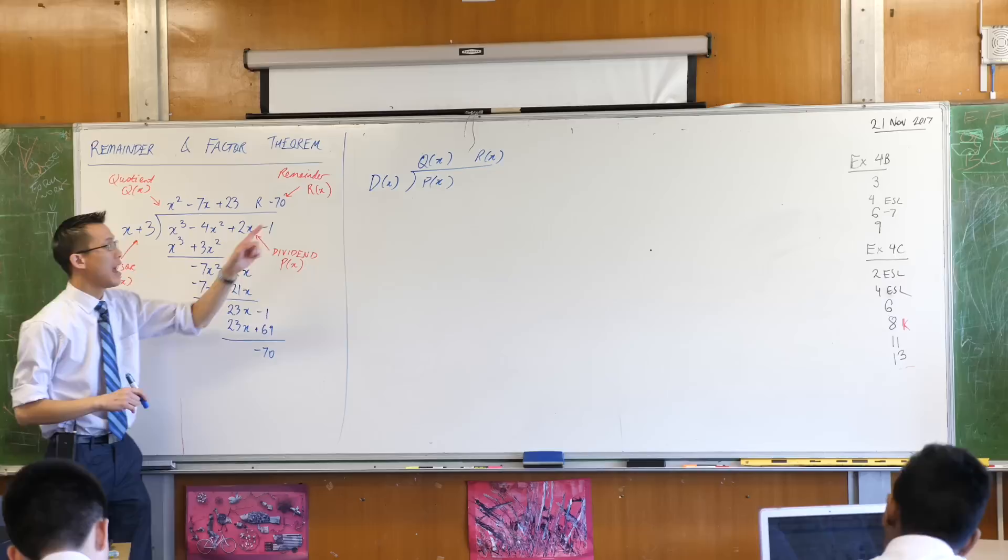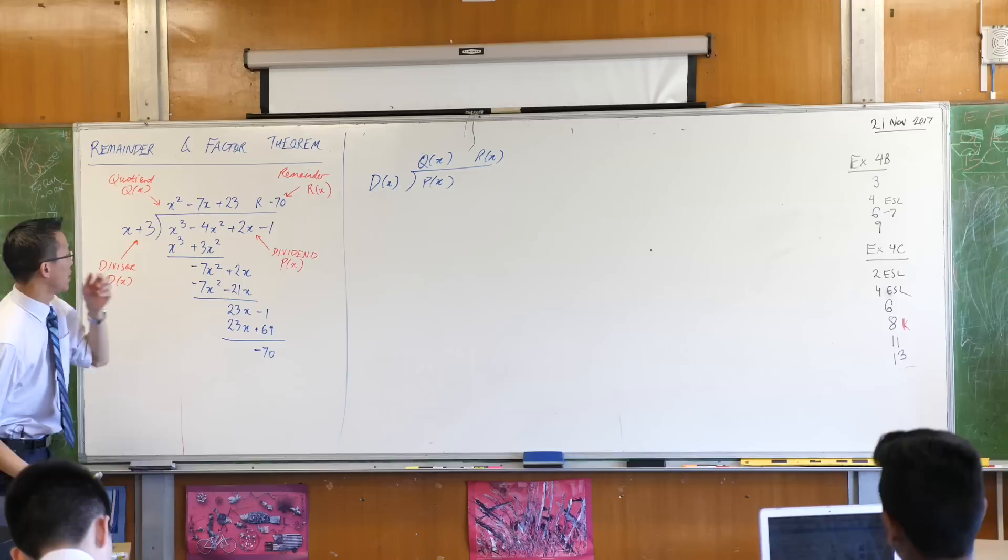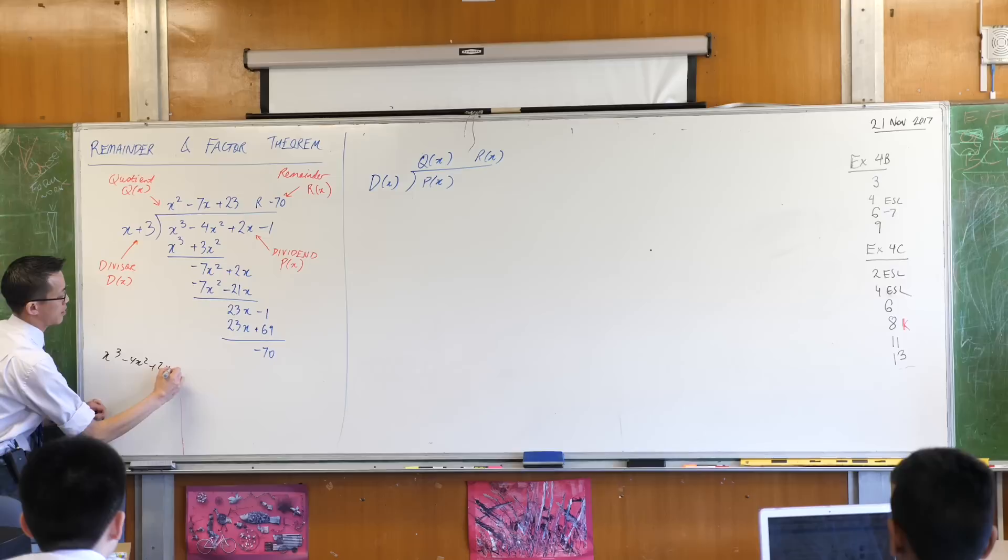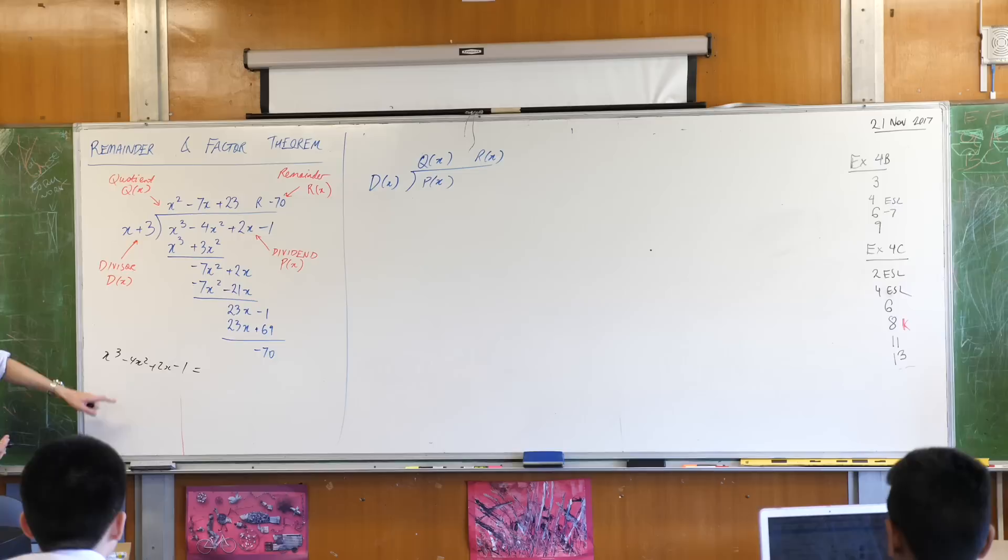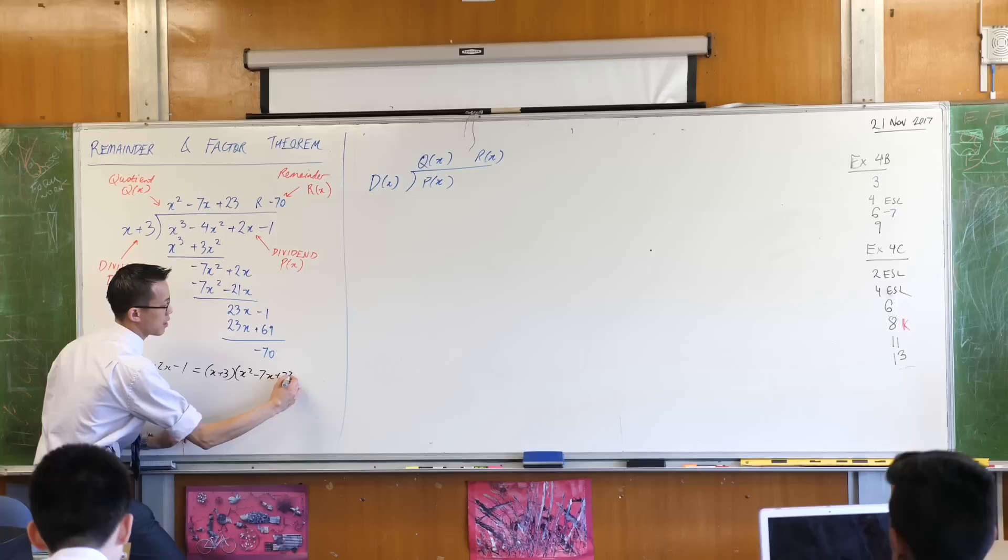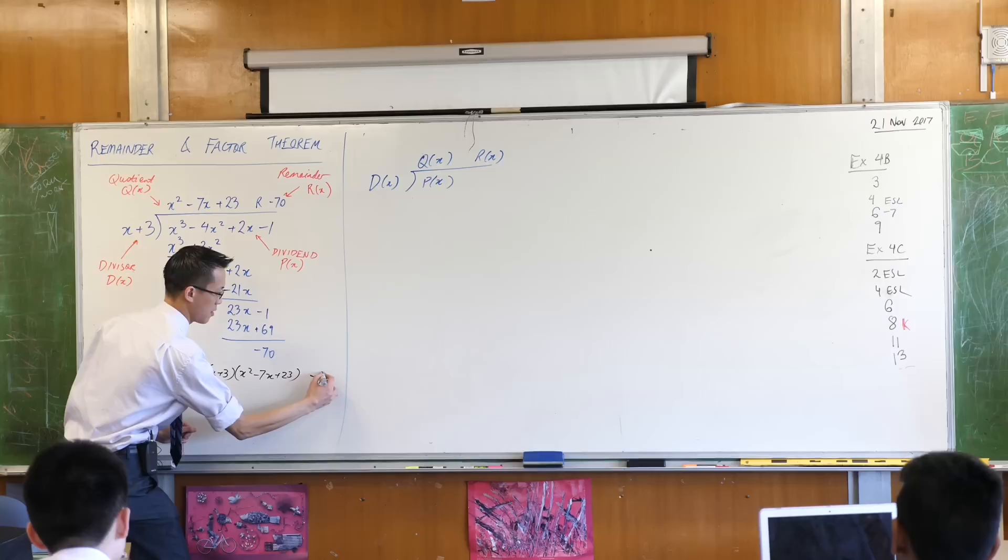Now what I'd like us to do is look at this thing here and make a statement about all of this from this working, and we'll come up with an equivalent statement over here. If I've divided this cubic by this linear thing and gotten this quadratic and this remainder, then I can say that the original polynomial P, x cubed minus 4x squared plus 2x minus 1, it equals the divisor multiplied by the quotient, and then how does the remainder come into play? Plus the remainder, which in this case is minus 70.